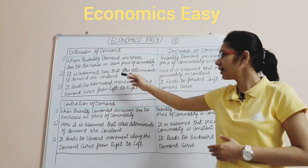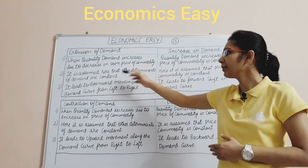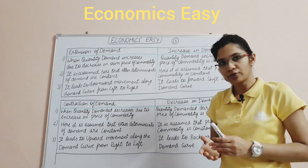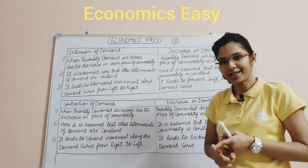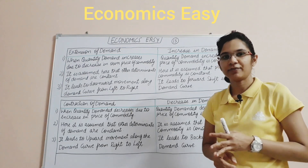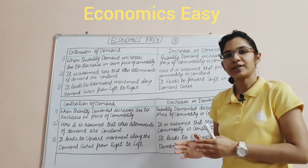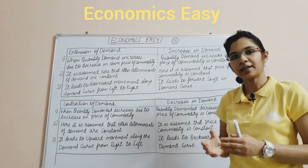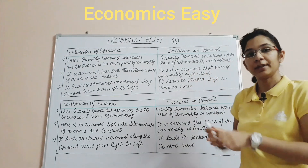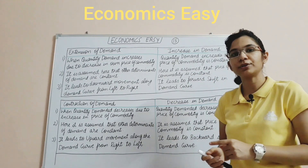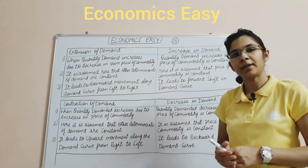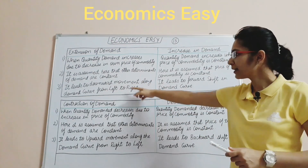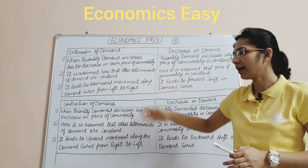In extension of demand, it is assumed that other determinants of demand are constant. That means factors other than price of the commodity — such as price of related goods, income of the consumer, taste preference and fashion, and expectations — are all held constant. In increase in demand, what is held constant is the price of the commodity itself.